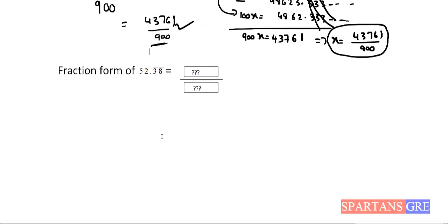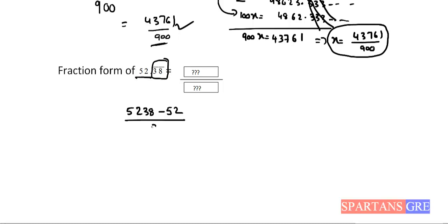Now let's solve another question using the direct method. Write the number as 5238, then subtract the non-recurring part: 52 is non-recurring, so numerator = 5238 − 52 = 5186. After the decimal there are two digits and both are recurring, so put double 9 in the denominator. Answer: 5186/99.